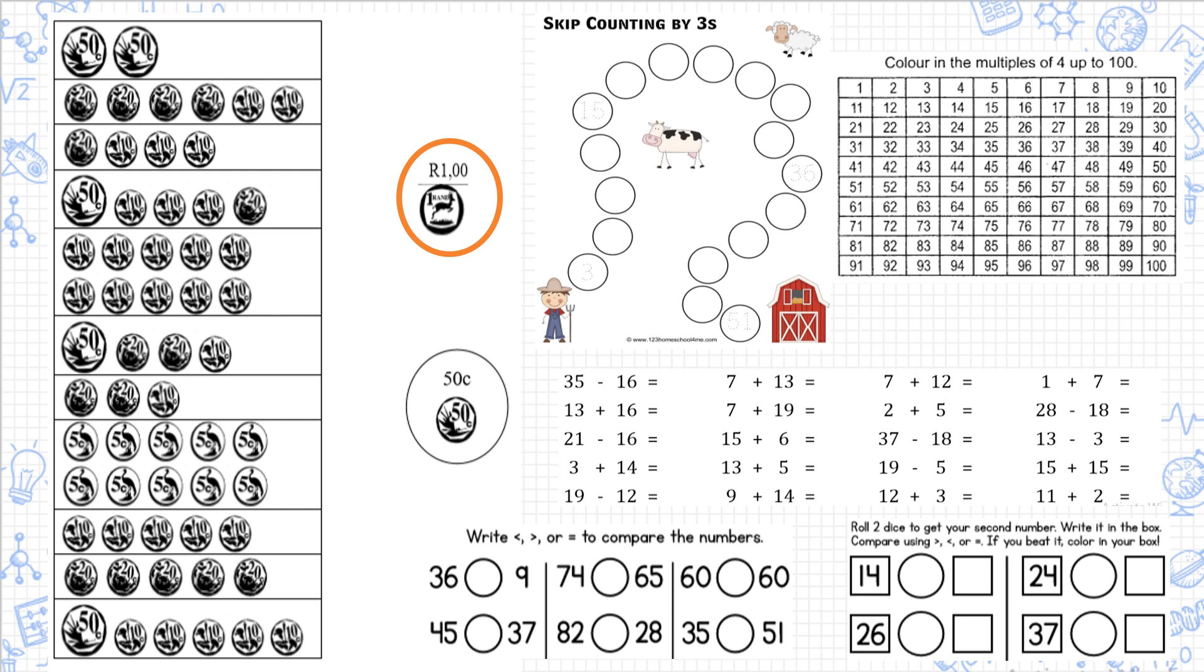I would like you to color the one rand on the right hand side orange and color the 50 cents green. Remember, 100 cents is the same as one rand. Add up the money - if it adds up to one rand you color it orange, if it adds up to 50 cents you color it green.